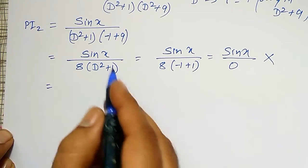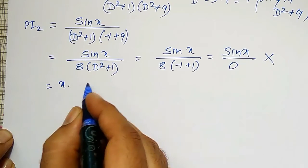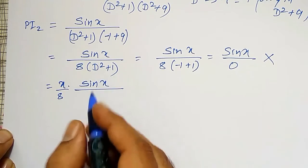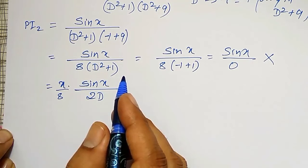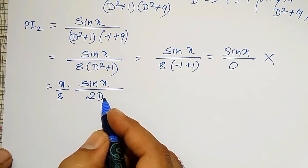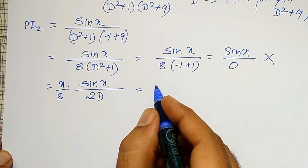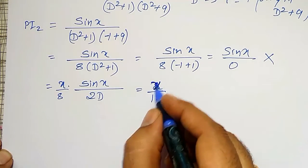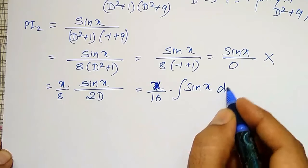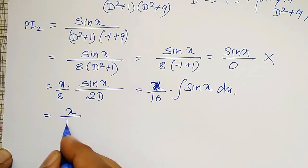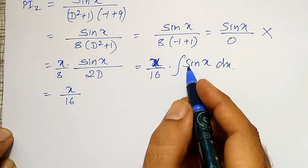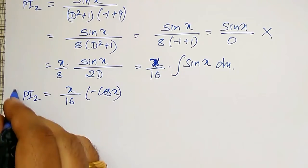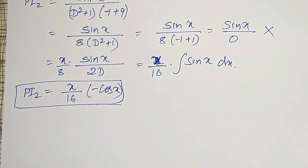Since the denominator becomes 0, I multiply by x and differentiate d squared plus 1 to get 2d. Therefore PI2 equals x divided by 16 into the integration of sin x dx, which gives minus cos x. So PI2 equals minus x cos x divided by 16. PI1 and PI2 are now both calculated.